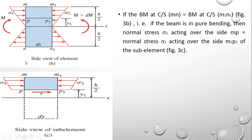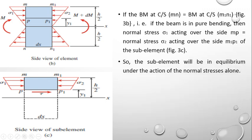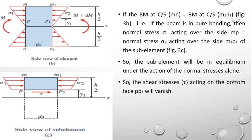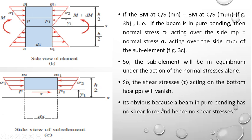If the beam's bending moment at cross-section MN equals that at M1N1, meaning the beam is in pure bending, then normal stress sigma1 over face MP must equal sigma2 over face M1P1. In that case the sub-element is in equilibrium under normal stresses alone, and the shear stresses on the bottom face PP1 automatically vanish. This is consistent with pure bending theory, which has no shear force and hence no shear stresses.